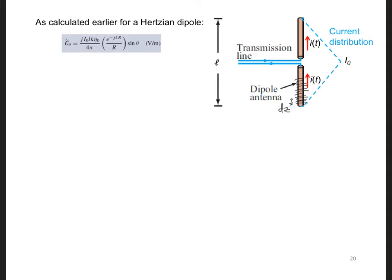Then we assume each infinitesimally short segment has a homogeneous current over its length. By doing this, we can treat each segment as a Hertzian dipole. To calculate the total radiated field from the entire dipole, we add up all contributions from each Hertzian dipole. That is, we integrate over its length.